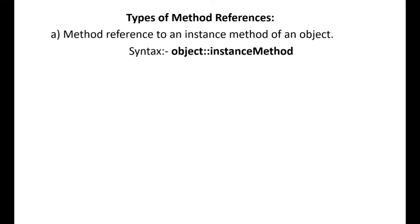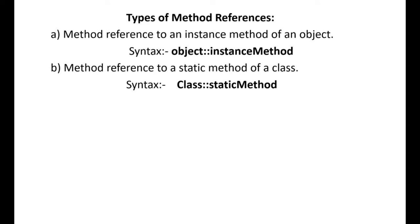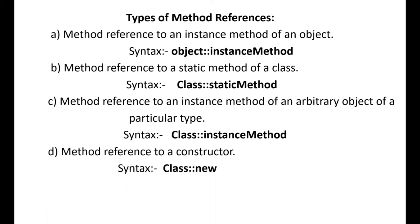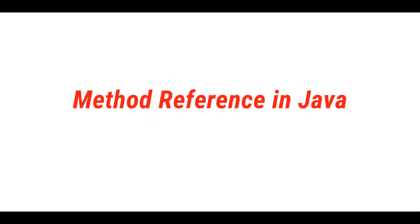What are the types of method references? There are four types. The first one is a reference to an instance method of an object - the syntax looks like object name double colon instance method. The next type is a reference to a static method of a class - class name with that static method. Then instance method reference, similar to static but passing an instance method. And finally, referring to a constructor method - the syntax is class name double colon new. Let's understand method references with the help of an example program.